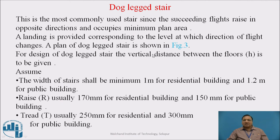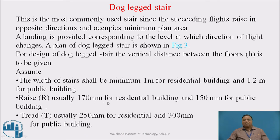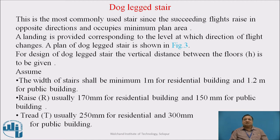For design of a dog-legged stair, the vertical distance between floors, h, is given. The width of the stair shall be minimum 1 meter for residential buildings and 1.2 meters for public buildings. Rise is usually 170 mm for residential buildings and 150 mm for public buildings. Tread t is 250 mm for residential buildings and 300 mm for public buildings. Depending upon the nature of the building and space availability, we assume the width of the stair, rise, and tread.